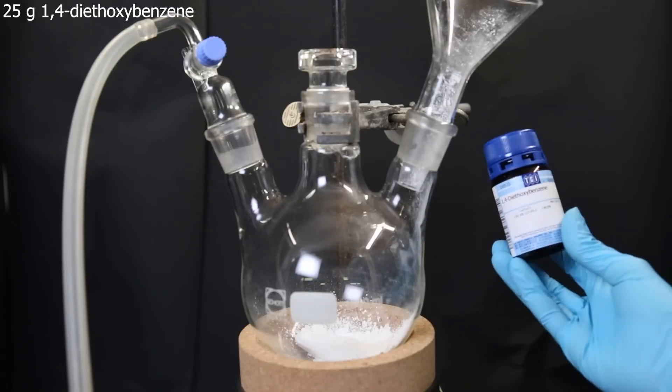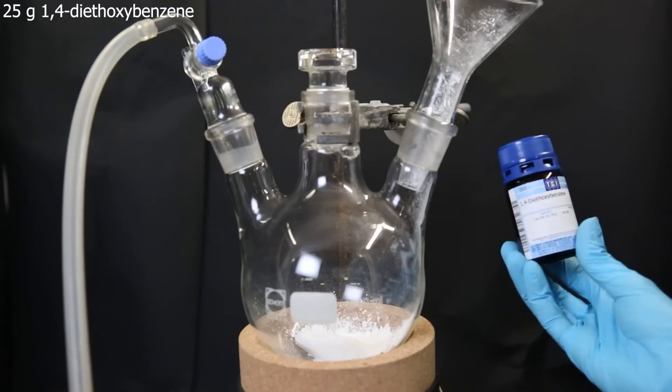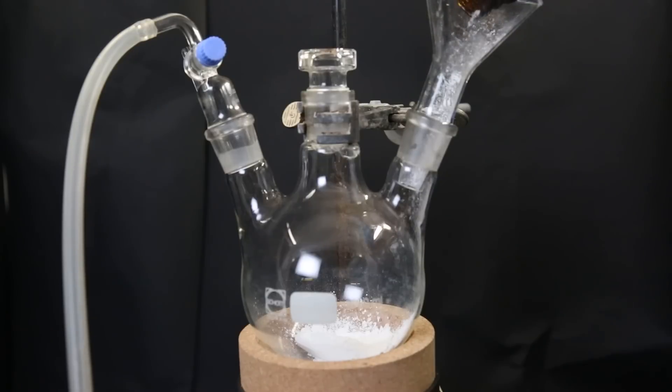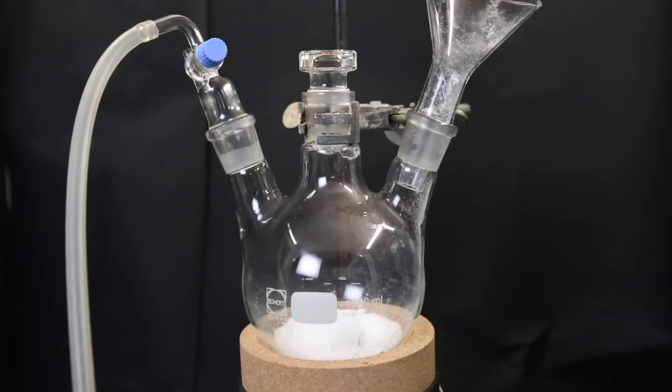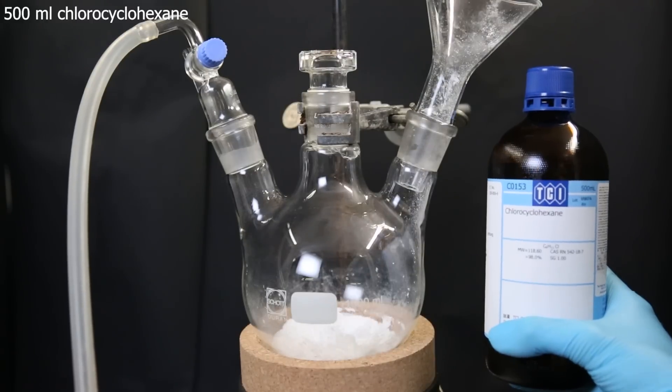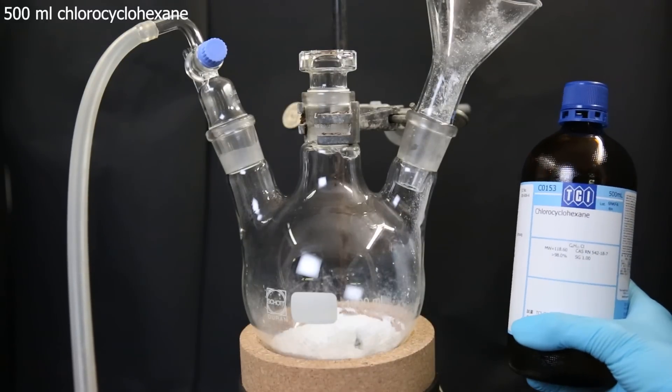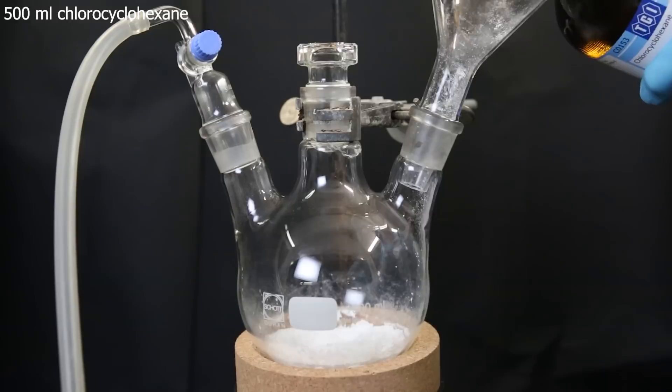Then I will add in 25 grams of 1,4-di-ethoxybenzene, which is the whole bottle. Now I will add in 500 ml of chlorocyclohexene, which is also the whole bottle.